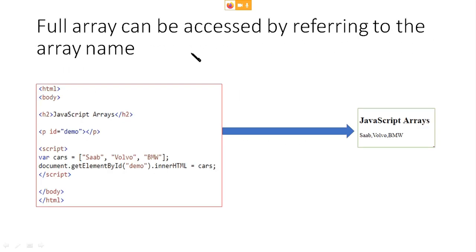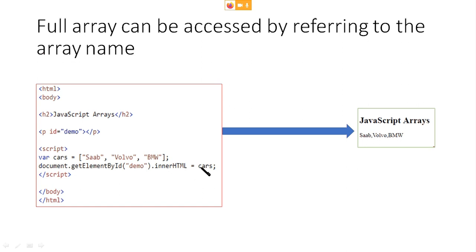The advantage in JavaScript is that the full array can be accessed by referring to the array name. Here you can see a JavaScript code inside an HTML page using a script tag. Variable cars is defined and using the function document.getElementById('demo') — demo is the ID name of the paragraph tag — .innerHTML is equal to cars. Here, cars is the full array name, so Saab, Volvo, and BMW are printed.